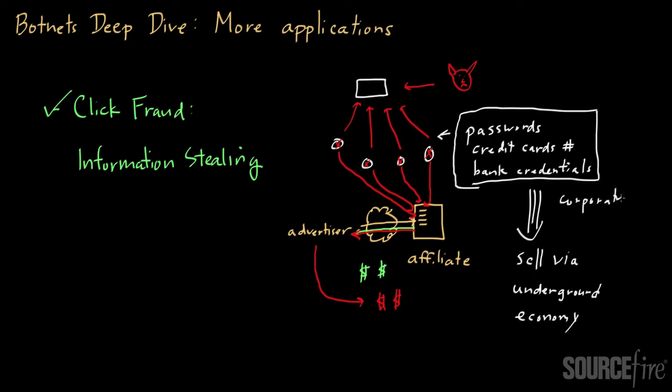So this could involve maybe passwords to critical corporate systems or customer data, things of that nature. And we have seen a lot of instances, especially in the last couple of years, of corporate espionage that's carried out that starts off with somebody getting compromised via a bot of some sort.